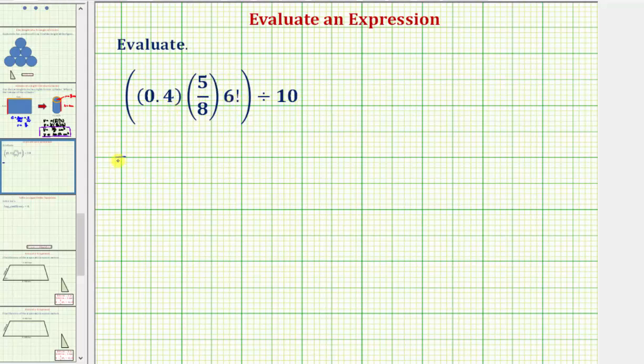So this expression is equivalent to, in parentheses, four tenths as a fraction times five eighths times six factorial, which is equal to six times five times four times three times two times one. So all this is still in the parentheses, and then we have divided by 10.